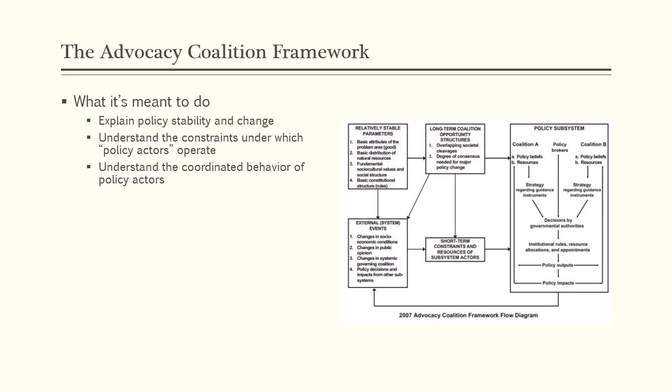So here is a schematic of the Advocacy Coalition Framework. I know it's a lot to take in at first, but we'll go through this bit by bit to understand the components of this framework. This is a bit more complicated than the policy stages model that we learned about in the previous video, but this extra complexity is meant to provide a more realistic and comprehensive view of the policymaking process.